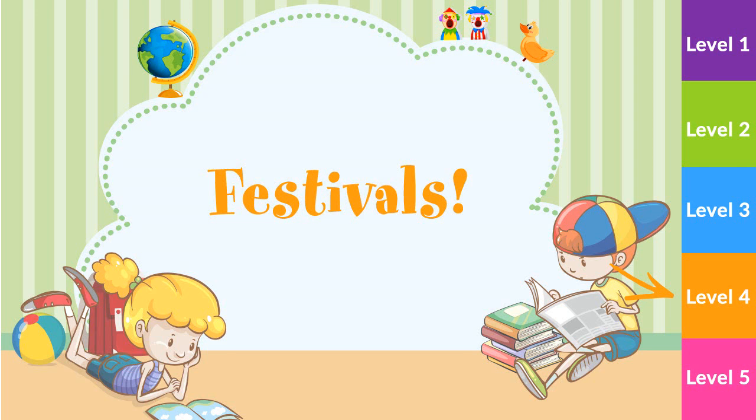Many children make a guy and burn it on top of the bonfire. Listen to the instructions and colour in the picture of Guy Fawkes' Night. Colour the flames of the fire orange and yellow and red.